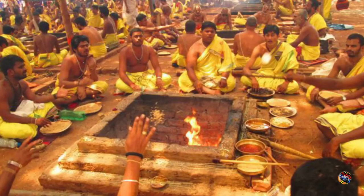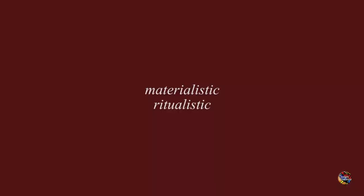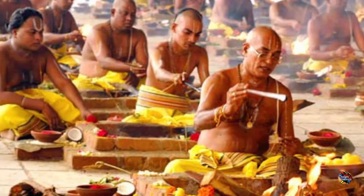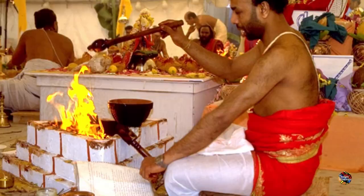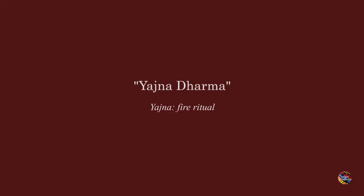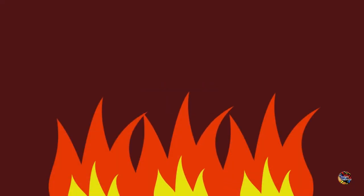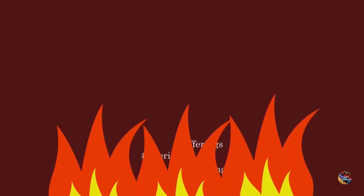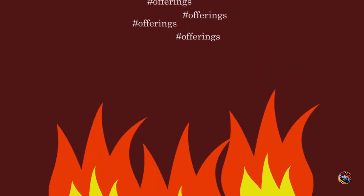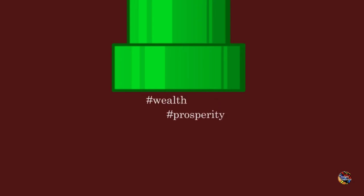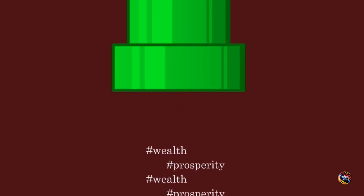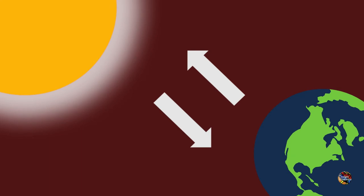The Vedic religion is a very materialistic and ritualistic religion. The people were basically fire worshippers and performed Yadnyas, so the Vedic religion is also known as Yadnyadharma. The idea behind performing a Yadnya was that the smoke rising from the fire carries the offerings up to the heavens to the Vedic gods like Indra, Varuna, and Surya. By doing the Yadnya and praising the gods, you would please them and they would grant you wealth and prosperity. The ritual of Yadnya would assure you a place in the heavens, where you spend all your virtues and then come back to the earth again.